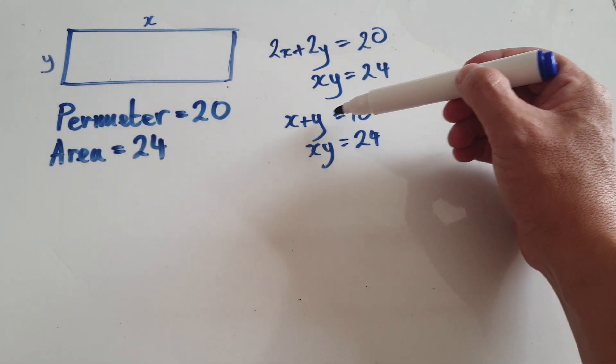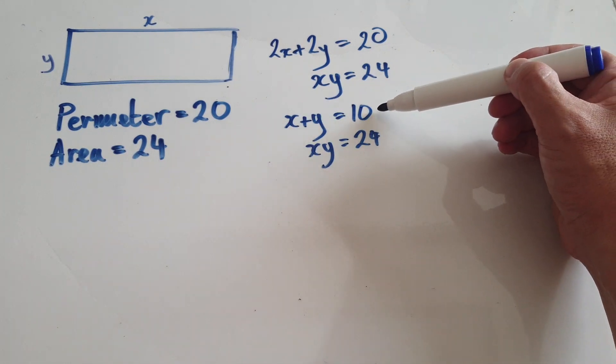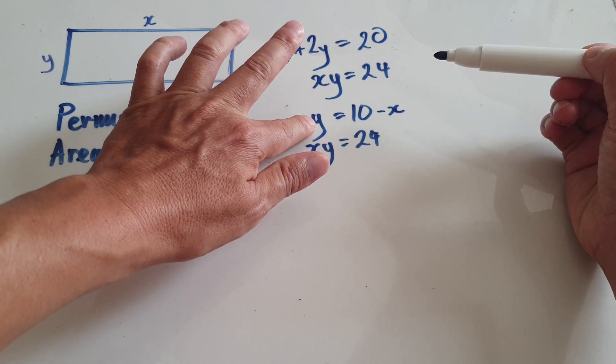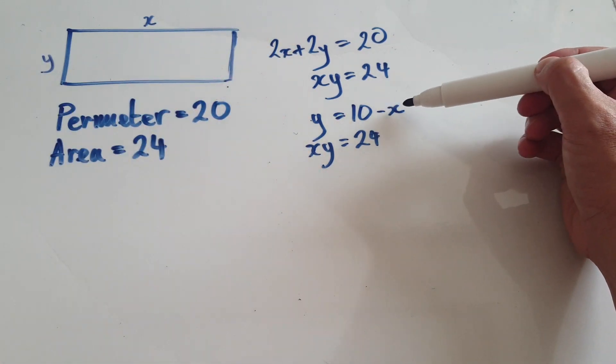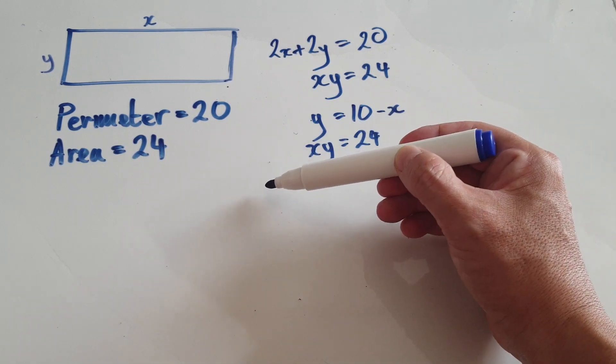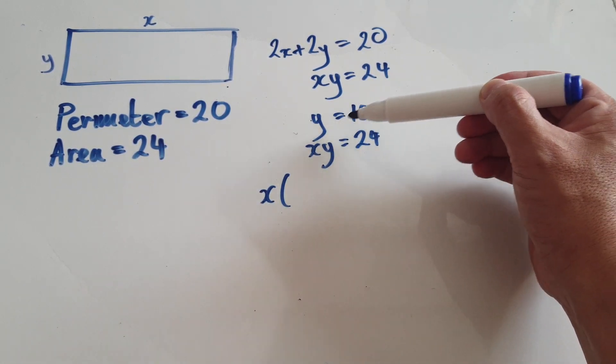So let's, from the first equation, let's make y the subject. Take away x from both sides, so that will then give us this. So remember, y—this is saying the same thing—so y is 10 take away x. Now put this into the y here.